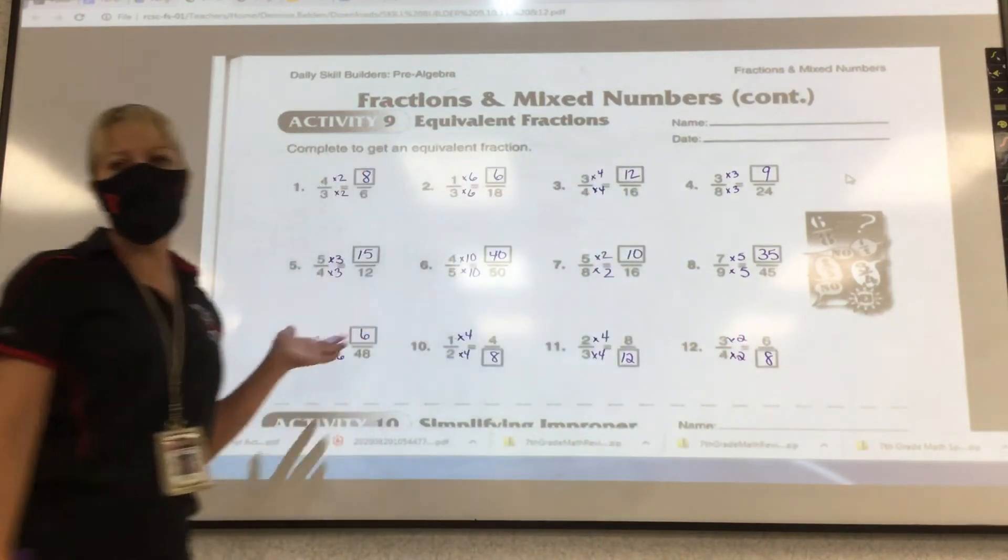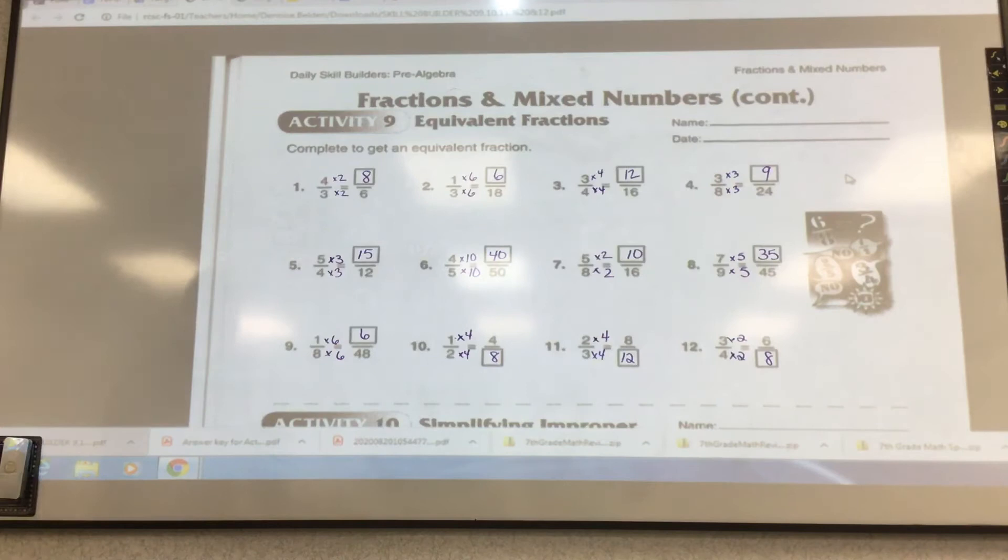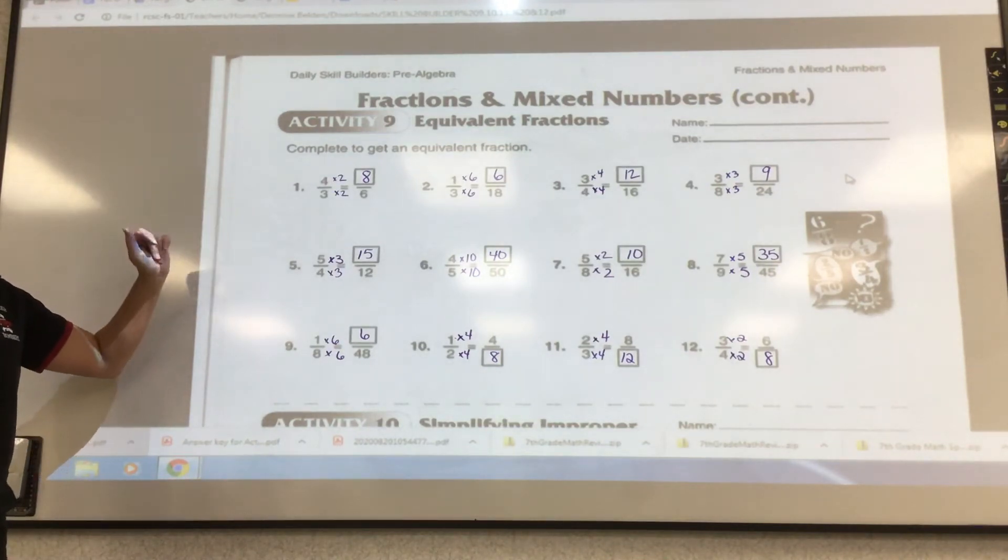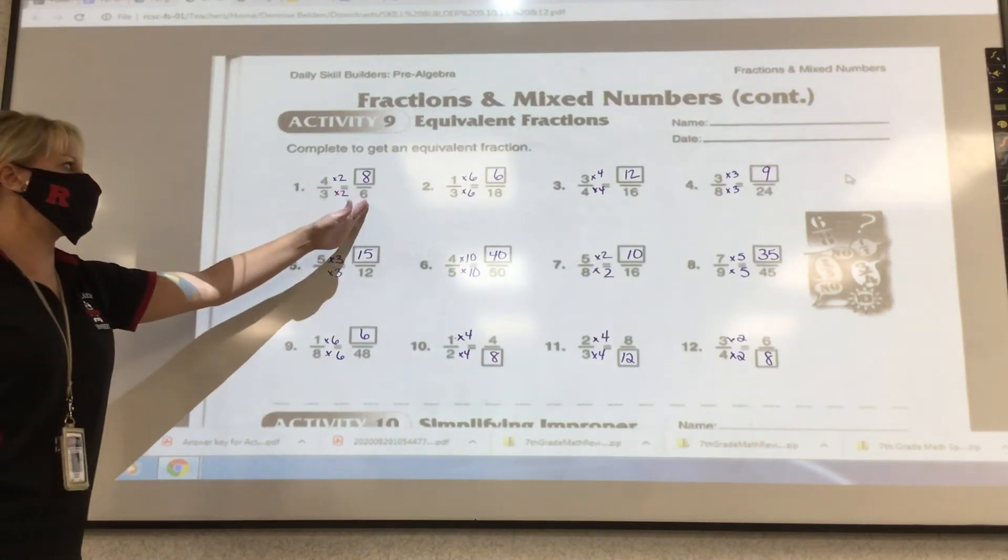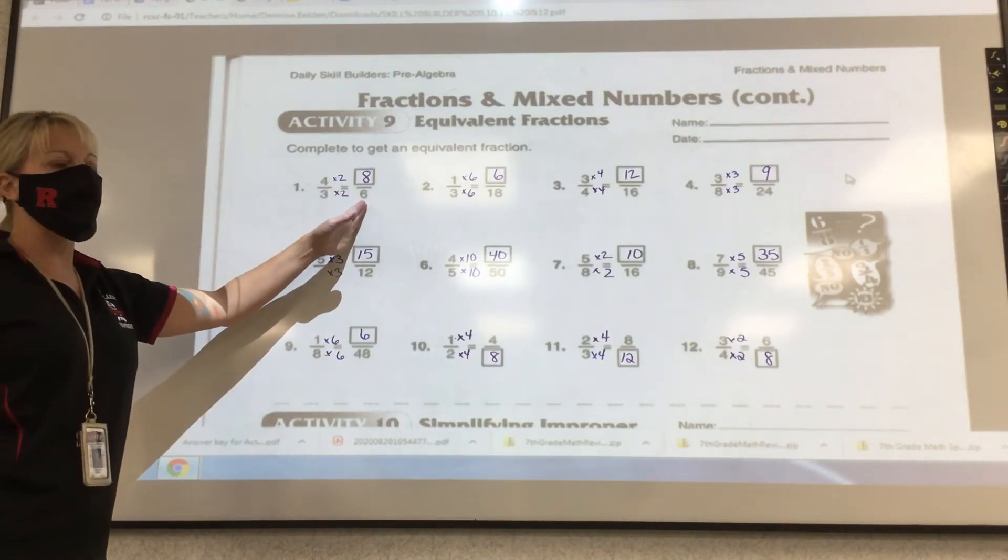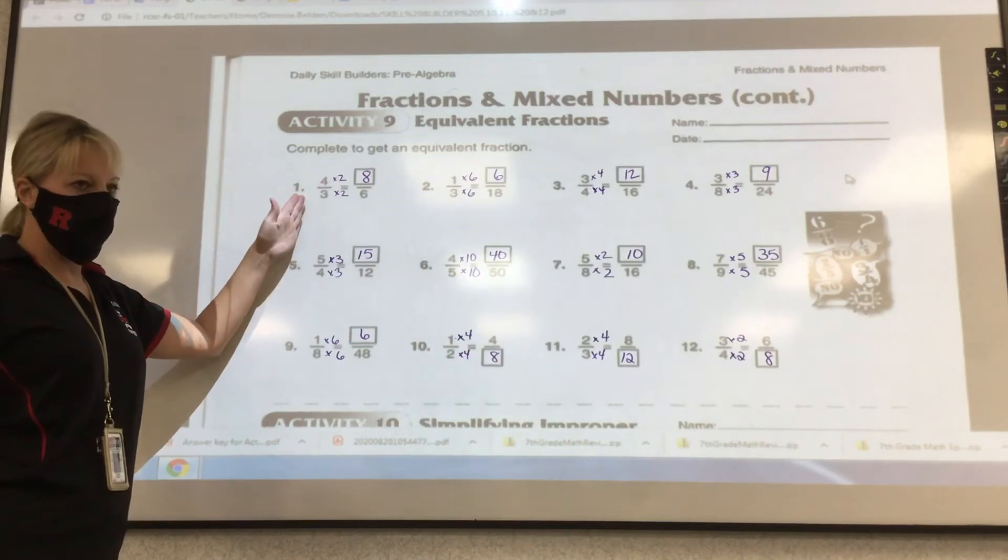Make sure you're showing me that you're multiplying. It's just like, we're finding the equivalent fractions, but you can also do it by reducing. Right? Like if you would start with 8/6, you'd divide them both by 2 to get 4/3.